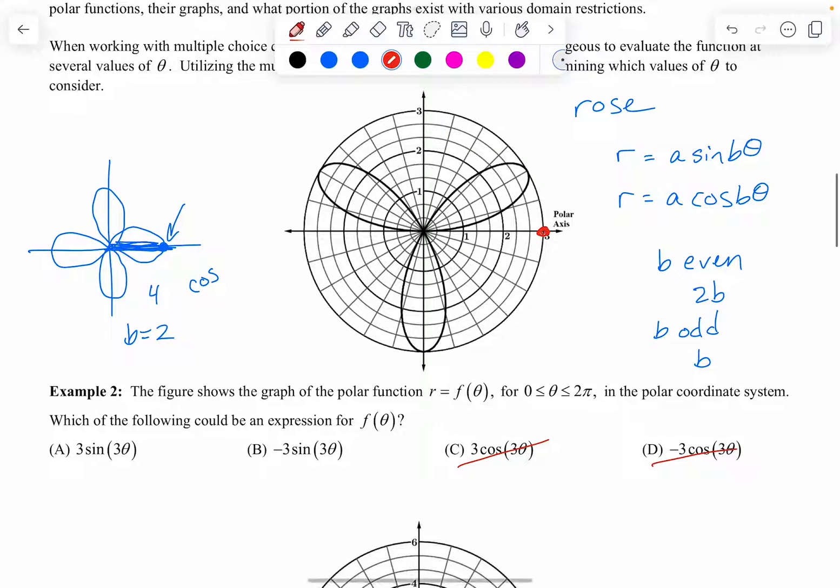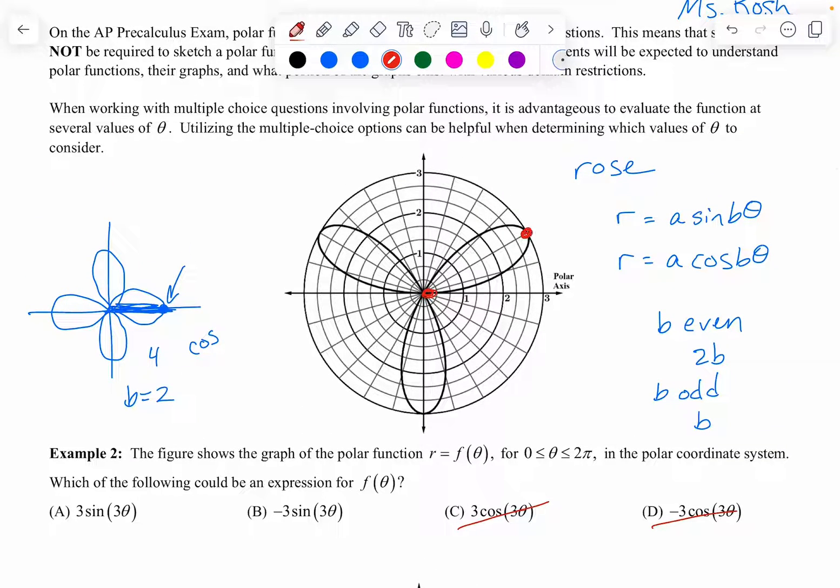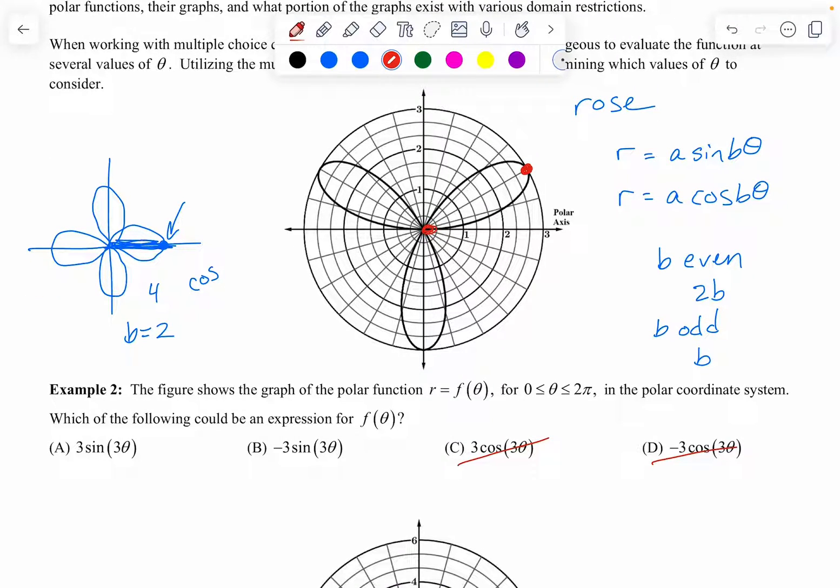Because I know, if I plug in, if I'm looking at three sine of three times zero, sine of zero is zero. And so then that's how I know I'm here and I'm not way out here. Okay. So let's see. Now the question is, is it going to be the positive or the negative? Well, so let's try plugging in. Zero is not very helpful, but maybe we can try plugging in, let's see. I'm trying to figure out what would this coordinate right here be? This looks like it's at pi over six.